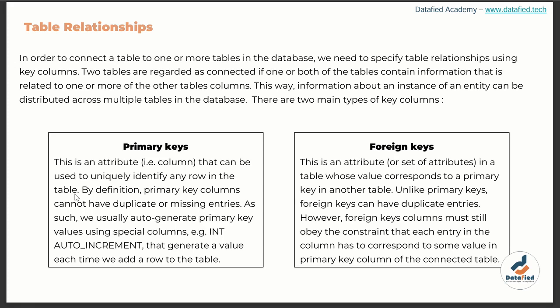By definition, primary keys cannot have duplicate or missing entries. As such, we usually auto-generate primary key values using special columns — for example, the integer auto-increment, which automatically generates a value each time you add a new record. So the first ID could be 1, the second 2, three, four, five, and so forth. Whenever you have such a column in a table, you can assign it as the primary key.